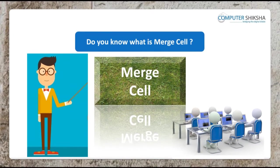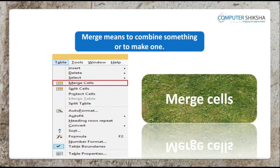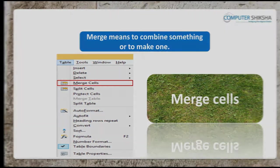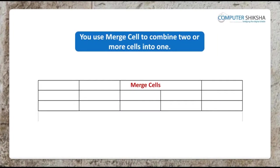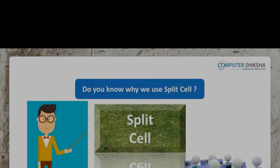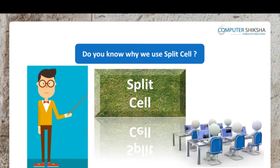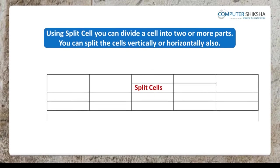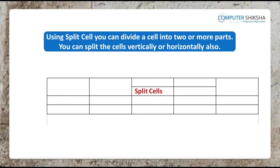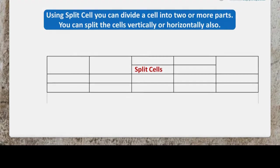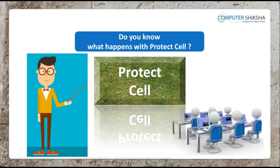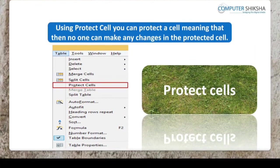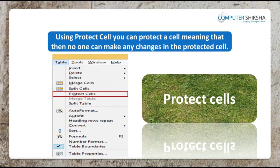Do you know what is merge cell? Merge means to combine something or to make one. You use merge cell to combine two or more cells into one. Do you know why we use split cell? Split means to separate something or to divide into parts. Using split cell, you can divide a cell into two or more parts. You can split the cells vertically or horizontally also.